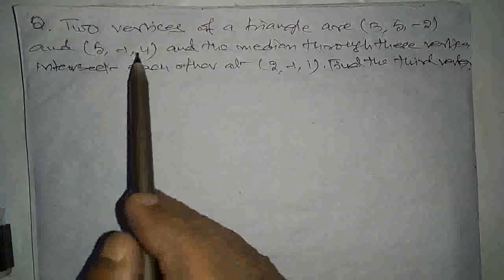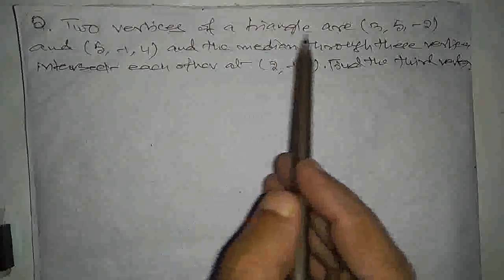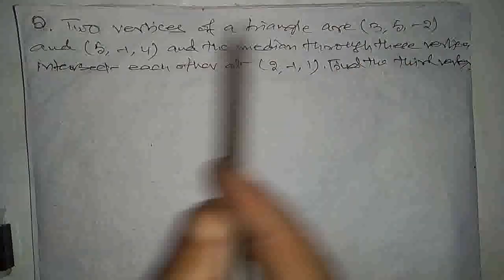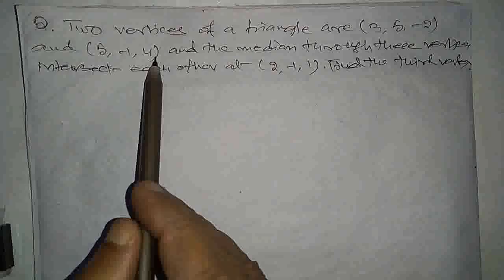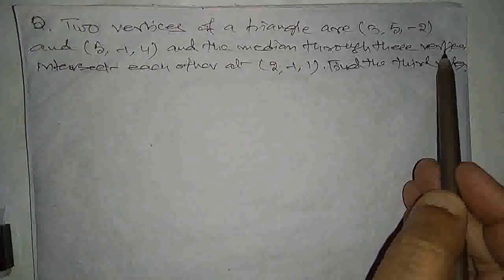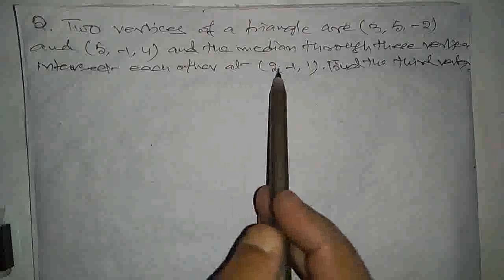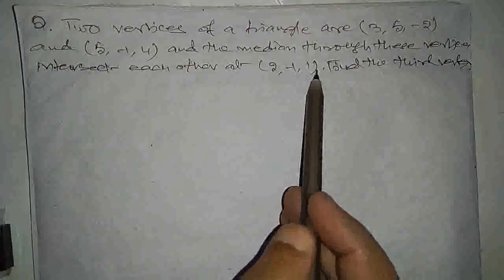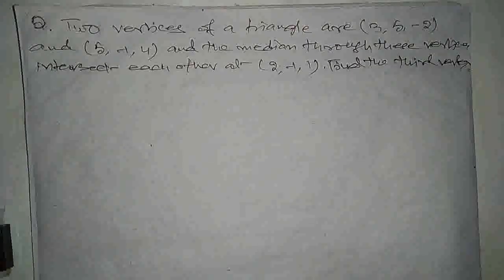Hello, question hai: two vertices of a triangle are (3, 5, -2) and (5, -1, 4), and the medians through these vertices intersect each other at (2, -1, 1). Find the third vertex.